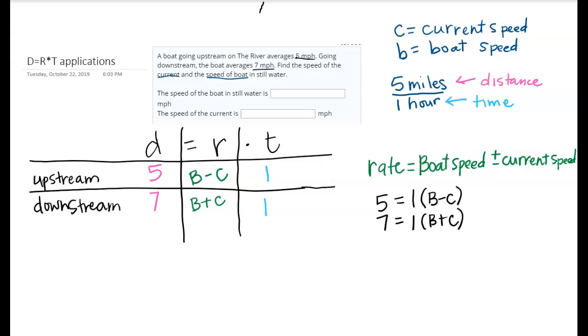That one that we're distributing through doesn't change anything inside my parentheses just by distributing that one. So really I have 5 equals B minus C and 7 equals B plus C.